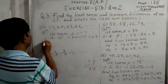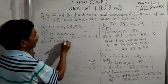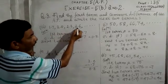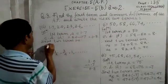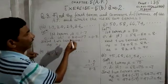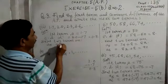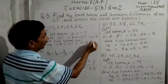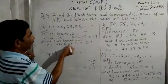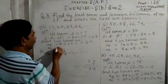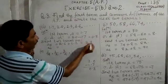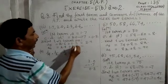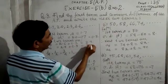We need to find A5 and A6. A5 equals A4 plus D, so 2.6 plus 0.3 equals 2.9. Then A6 equals A5 plus D, so 2.9 plus 0.3 equals 3.2.